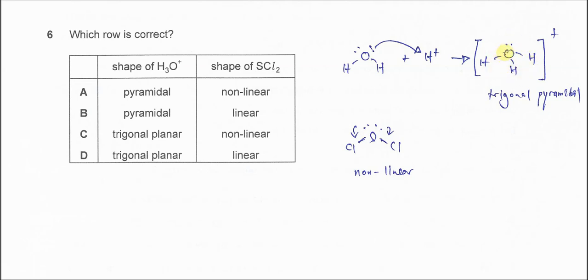The oxygen is the central atom. Now it has one lone pair and three bonding pairs. So the geometry or the shape must be trigonal pyramidal. This is similar to the ammonia that you learned.